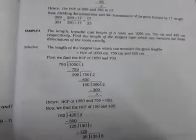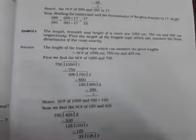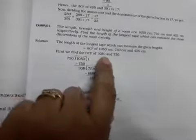1050 cm, 750 cm, and 425 cm. For this, you have to choose—first we find HCF of 1050 and 750, like this. It is 150.